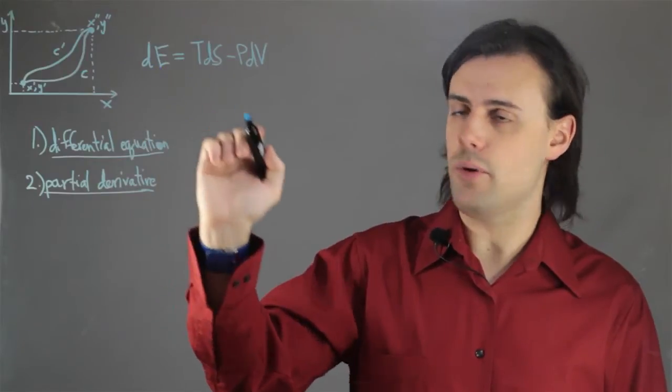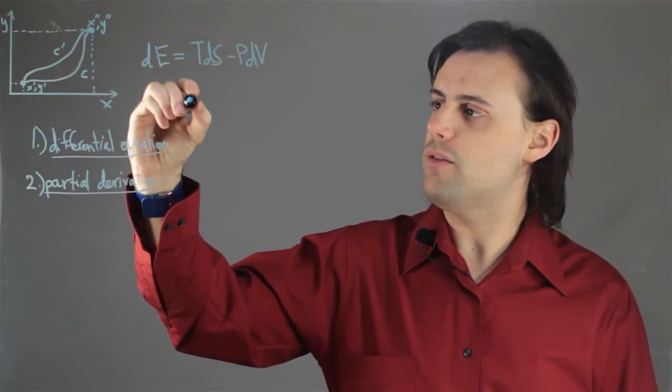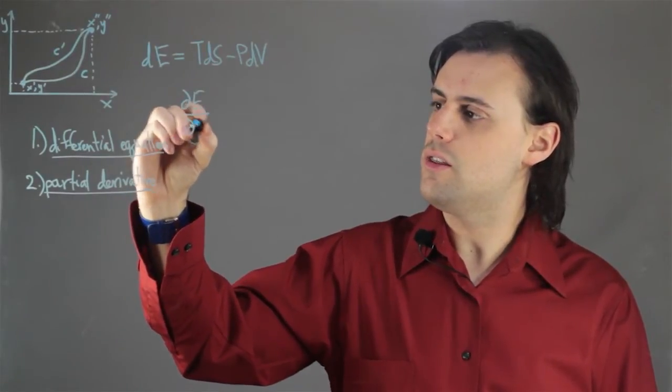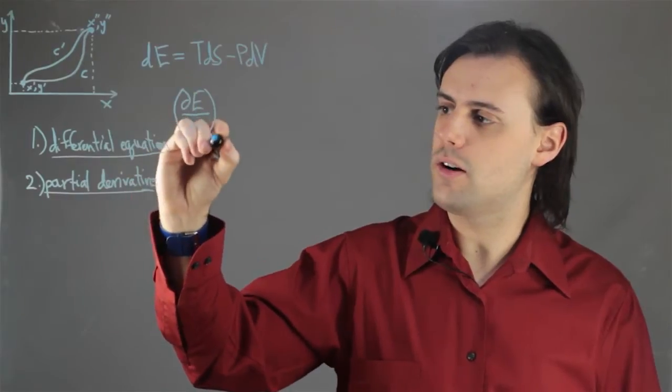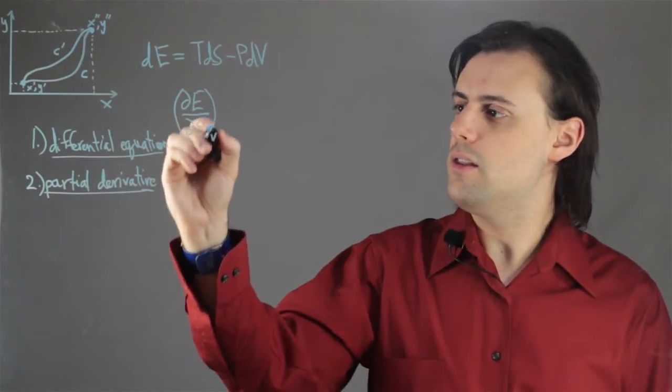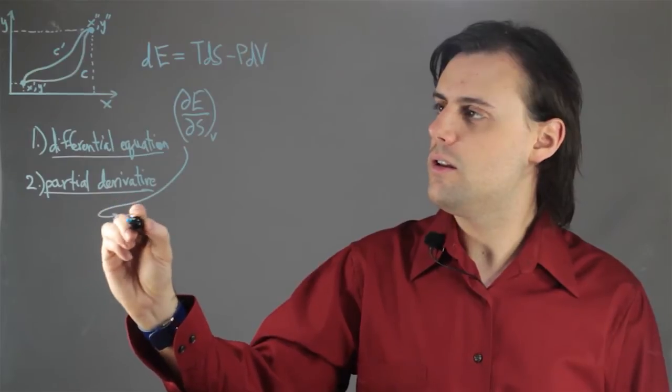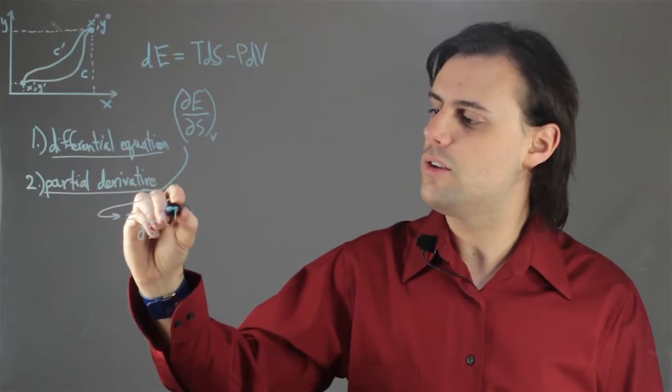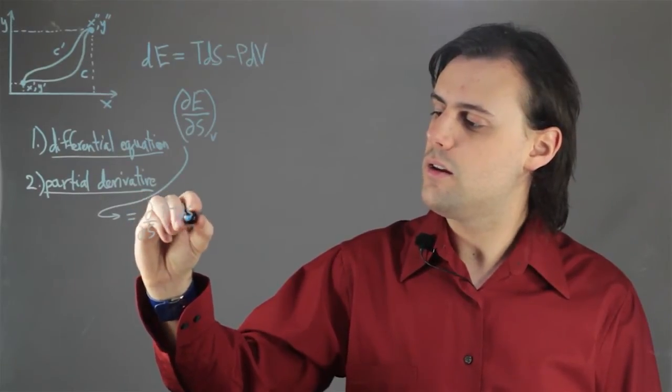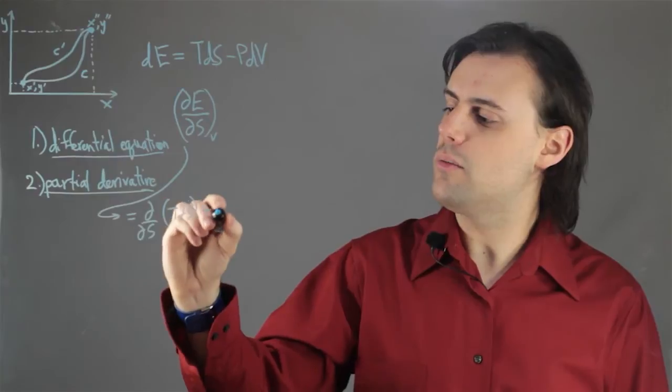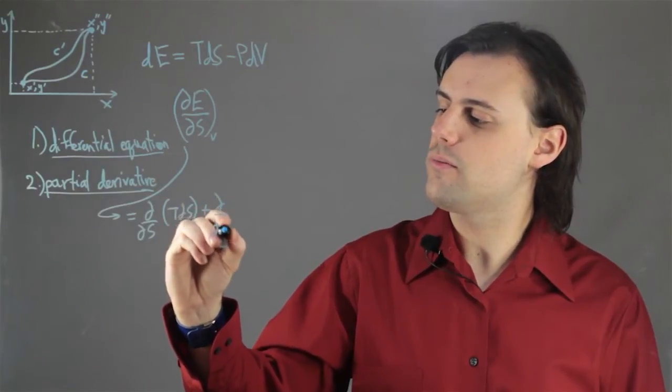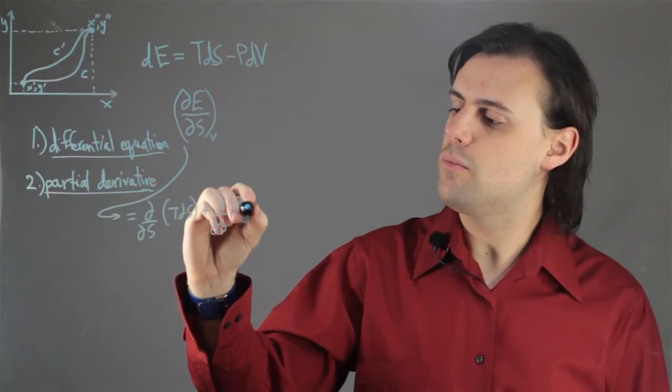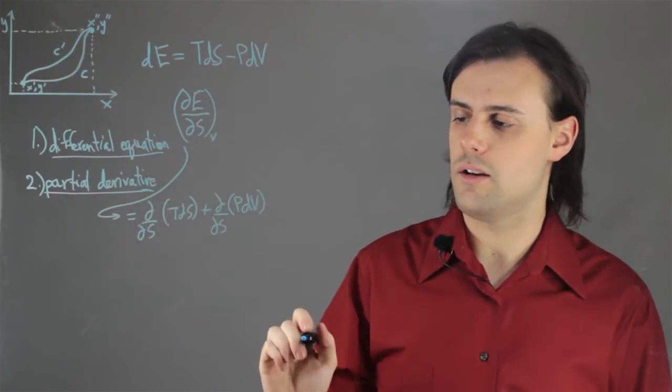So, for example, here, if I take the partial derivative of the energy with respect to the entropy and I assume constant volume, then this will be equal to the partial derivative of temperature dS, plus the partial derivative of entropy with respect to the pressure and volume term.